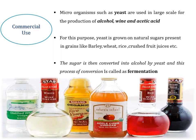Microorganisms such as yeast are used on a large scale for the commercial production of alcohol, wine, and acetic acid. For this purpose, yeast is grown on natural sugars present in grains like barley, beet, rice, and crushed fruit juices, and then breaks down the sugar converting it into alcohol. This process of conversion is called fermentation, which was discovered by Louis Pasteur in 1857.